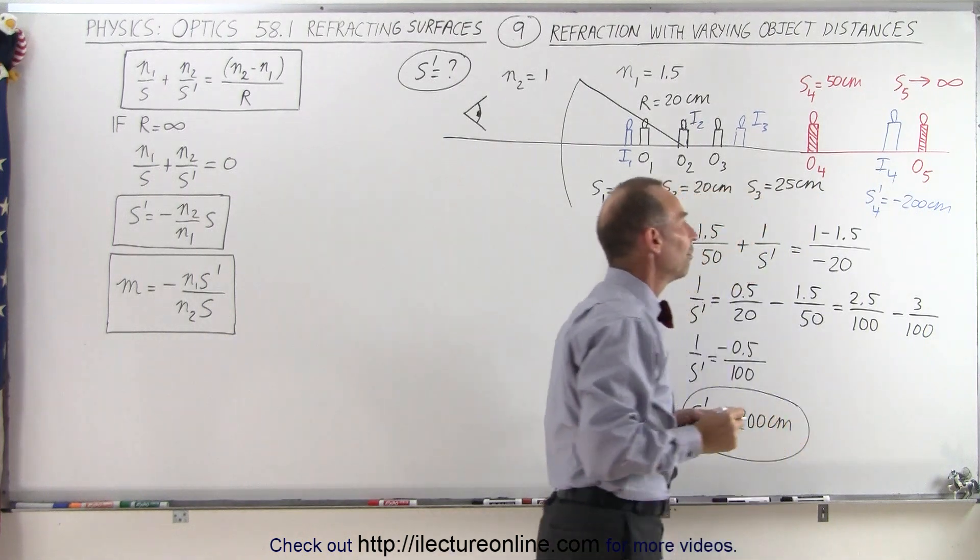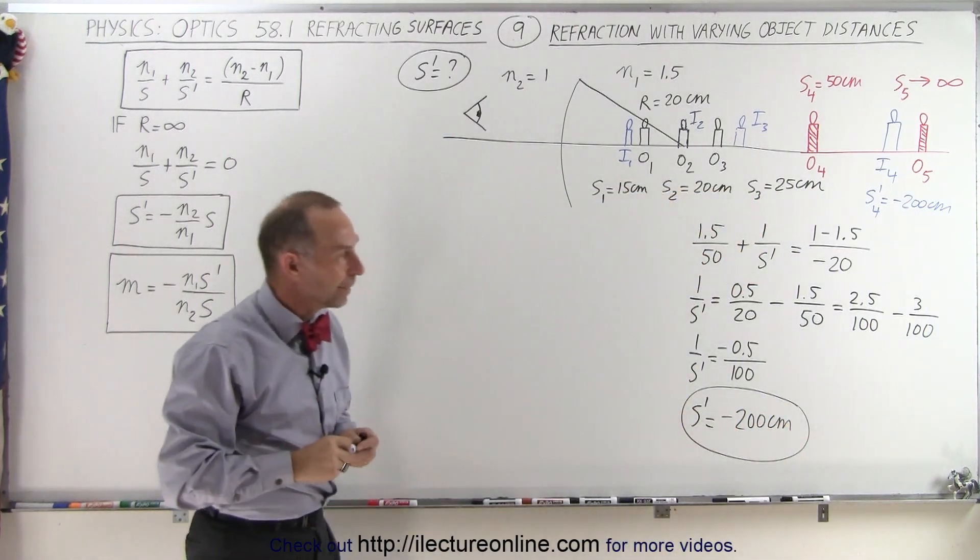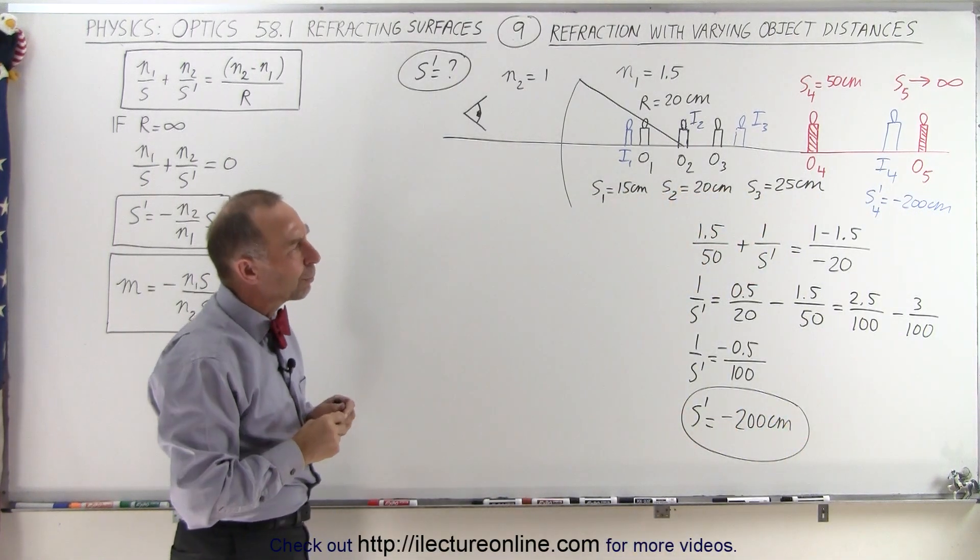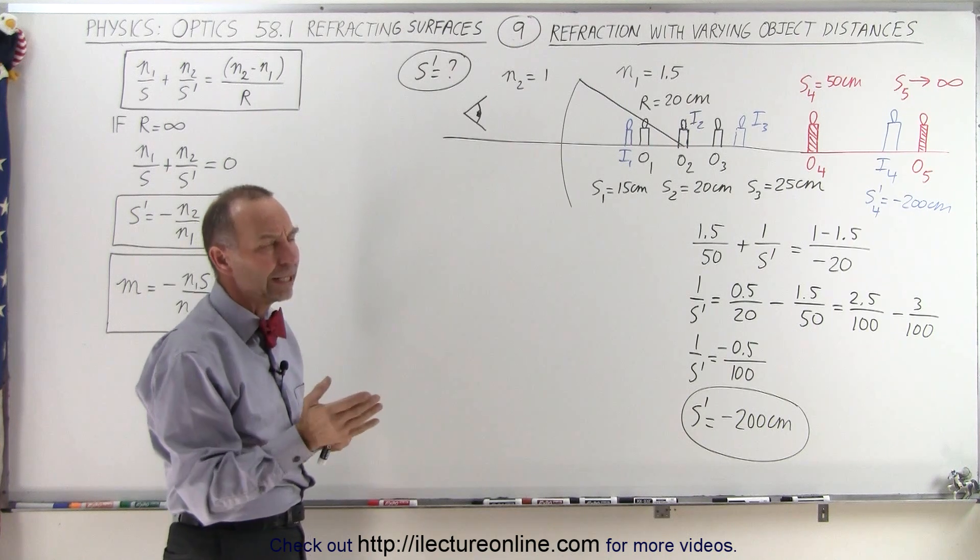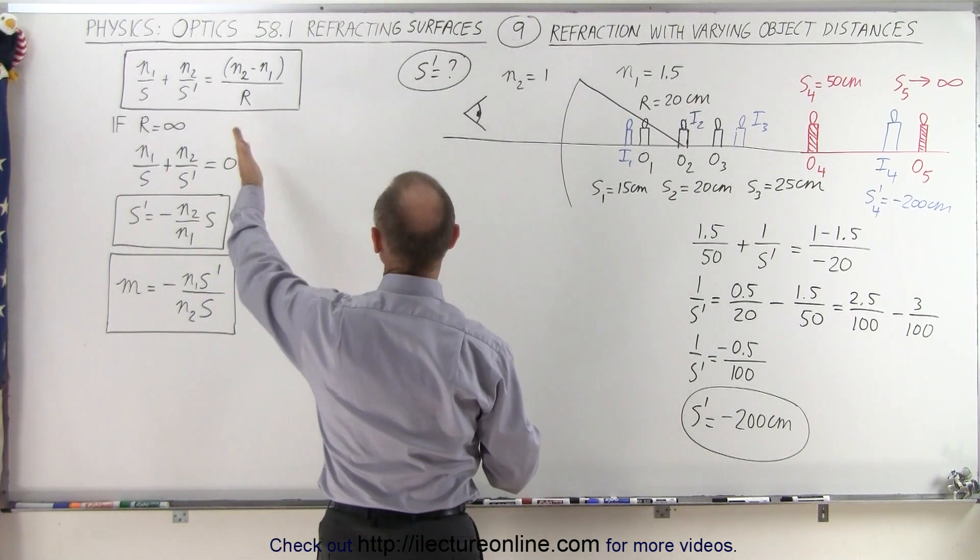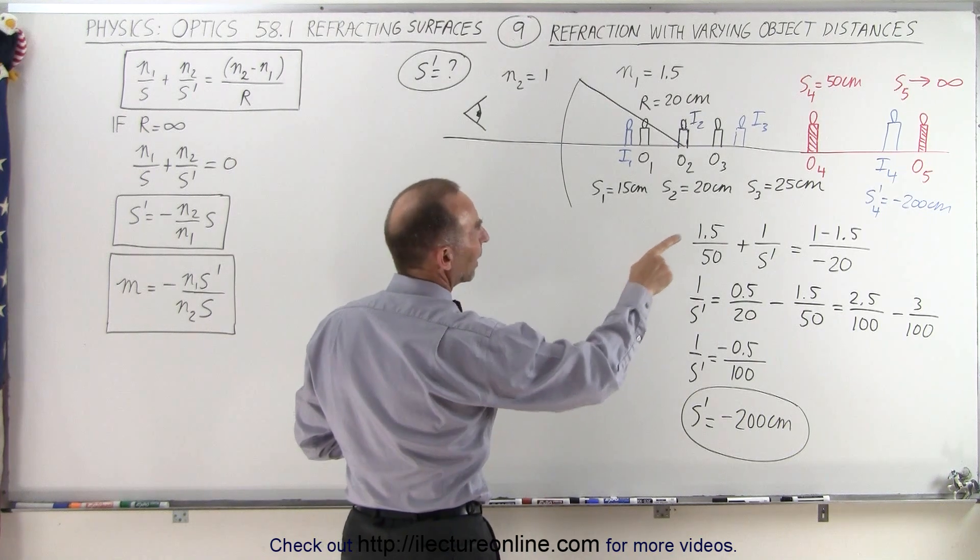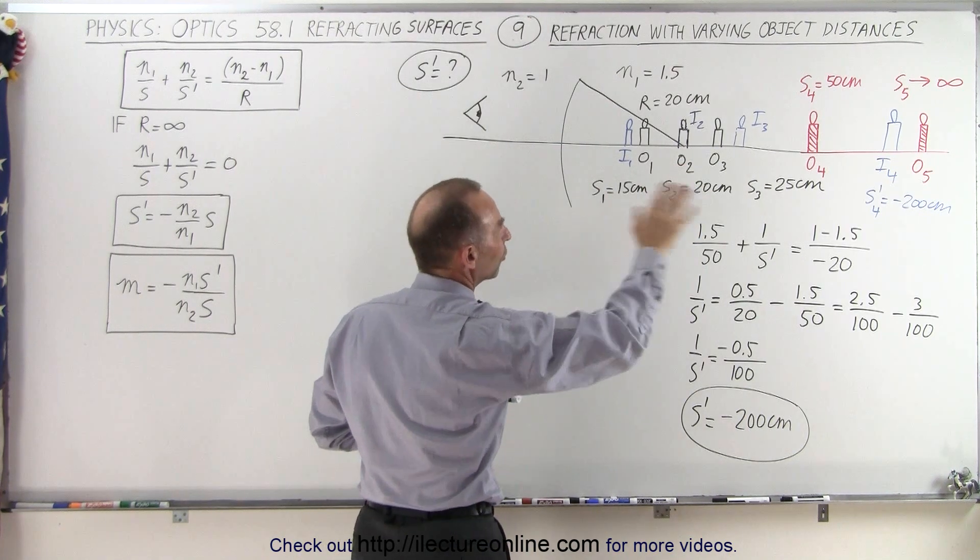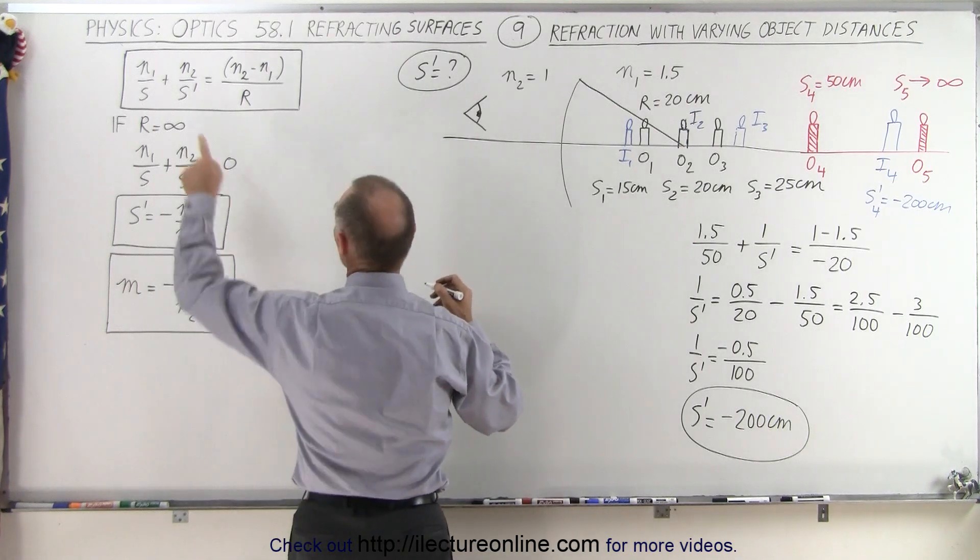Well, what do you think is going to happen when we place the object near infinity? That should be interesting. Let's figure it out. So now again we use the same equation. Now we use the case where s5, the object distance, is going to go to infinity.